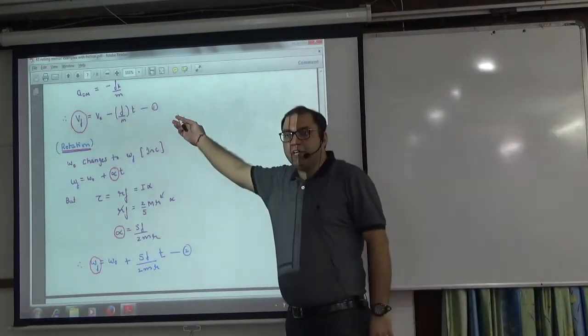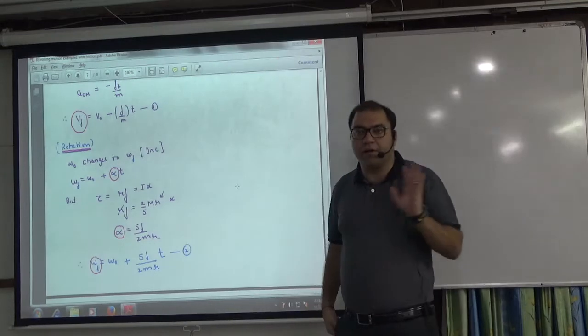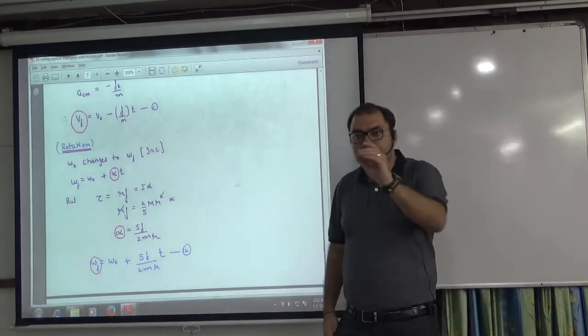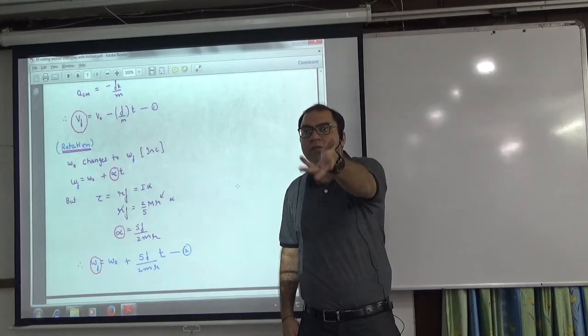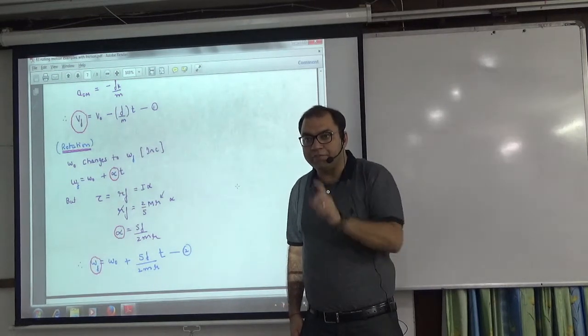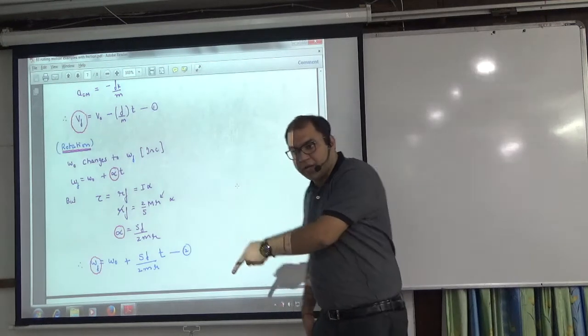So from center of mass, Vf has come. From rotation, omega_f has come. Now, one equation: v is equal to u plus at, and the other equation: omega is equal to omega_not plus alpha t. So final Vf has come, final omega_f has come.